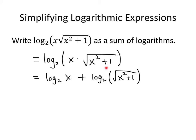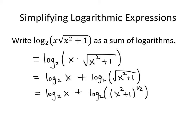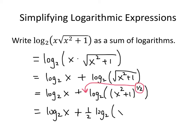What about this square root term? We can rewrite that square root as something raised to the 1/2 power. So let's rewrite the square root of x squared plus 1 as x squared plus 1, all raised to the 1/2 power. Now we can use the log rule that says if you have something raised to a power inside a logarithm, you can take that power and bring it down out front. So we get log base 2 of x plus 1/2 times the log base 2 of x squared plus 1.